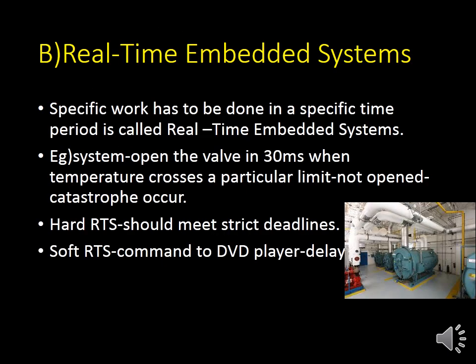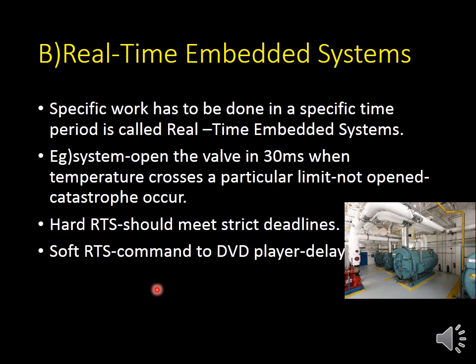The next one is real-time embedded system. If you want to do a specific task in a specific time period, it is called a real-time embedded system. For example, if you want to open a valve in 30 milliseconds when the temperature crosses a particular limit, that is a real-time embedded system. There are two types: hard real-time and soft real-time. In a hard real-time system, if the valve is not opened in time, the temperature exceeds the limit and the burner may burst — a big catastrophe may occur. Soft real-time means, for example, controlling a DVD player with a remote: pressing the play button may take a few milliseconds to operate, but this delay does not affect anything. That is a soft real-time embedded system.